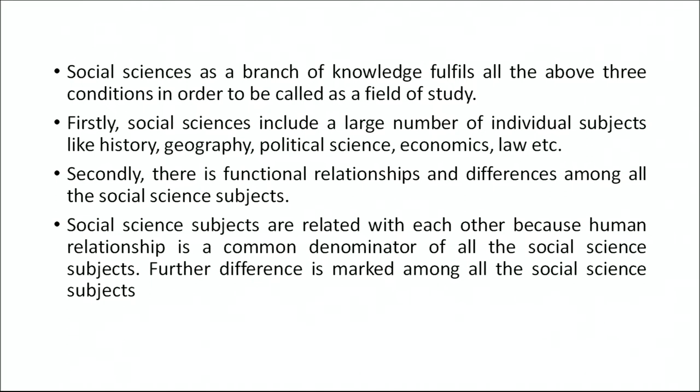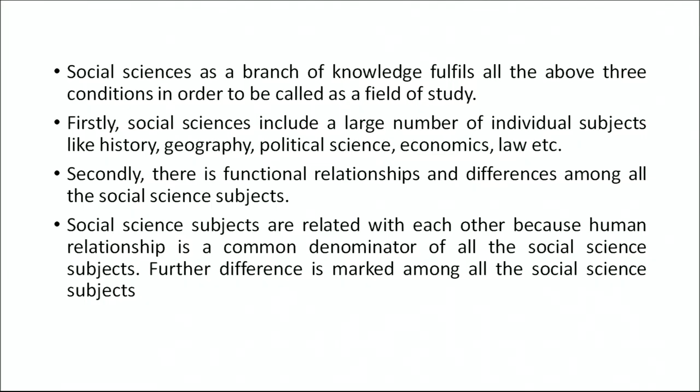Firstly, social science includes a large number of individual subjects. Most of you might know the major subjects which can be called social sciences — for example, history, geography, political science, economics, law, and education. Secondly, there is a functional relationship and differences among all the social science subjects. History and political science are mutually related, yet there are differences in the basic area of inquiry and focus between them. The same goes with political science and economics, economics and law, law and education, and so on.